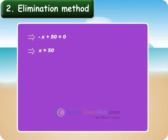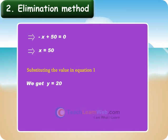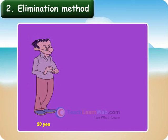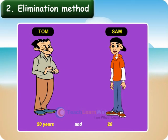So x is equal to 50. Step 3: Substituting the value of x in equation 1, we get y is equal to 20. So Tom's present age is 50 years and that of Sam is 20 years. Children, verify the values x equals 50 and y equals 20 by substituting them in any of the equations.